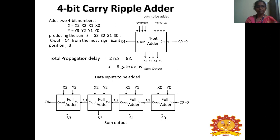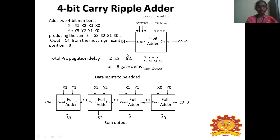A 4-bit carry ripple adder adds two 4-bit numbers X (X3, X2, X1, X0) and Y (Y3, Y2, Y1, Y0), producing output S3, S2, S1, S0 and most significant carry bit C4. For one full adder it takes 2 gate delays, and since we use 4 full adders, it takes 4×2 = 8 gate delays total.